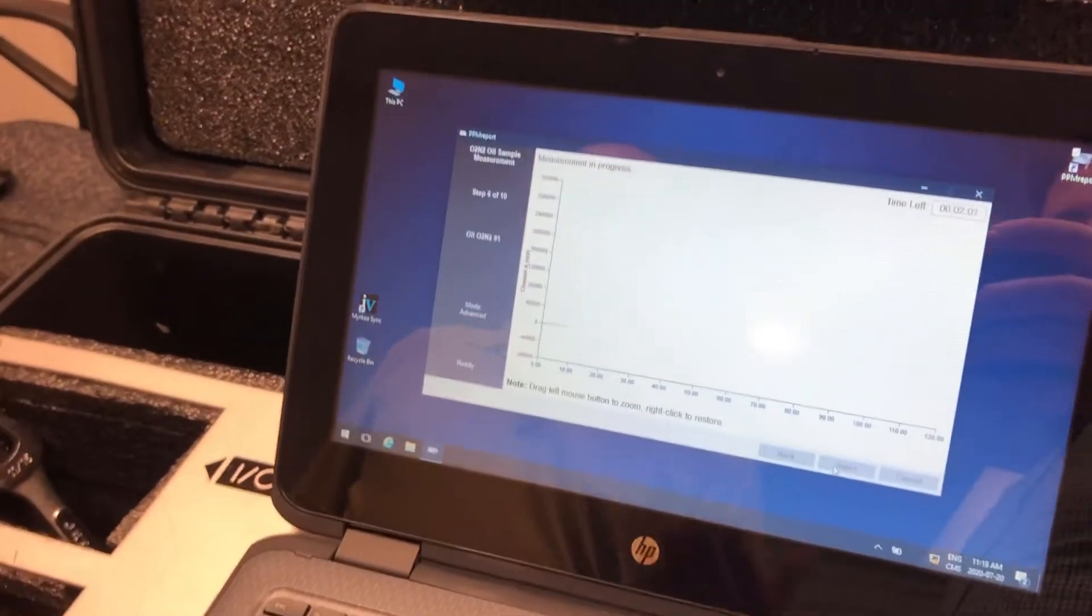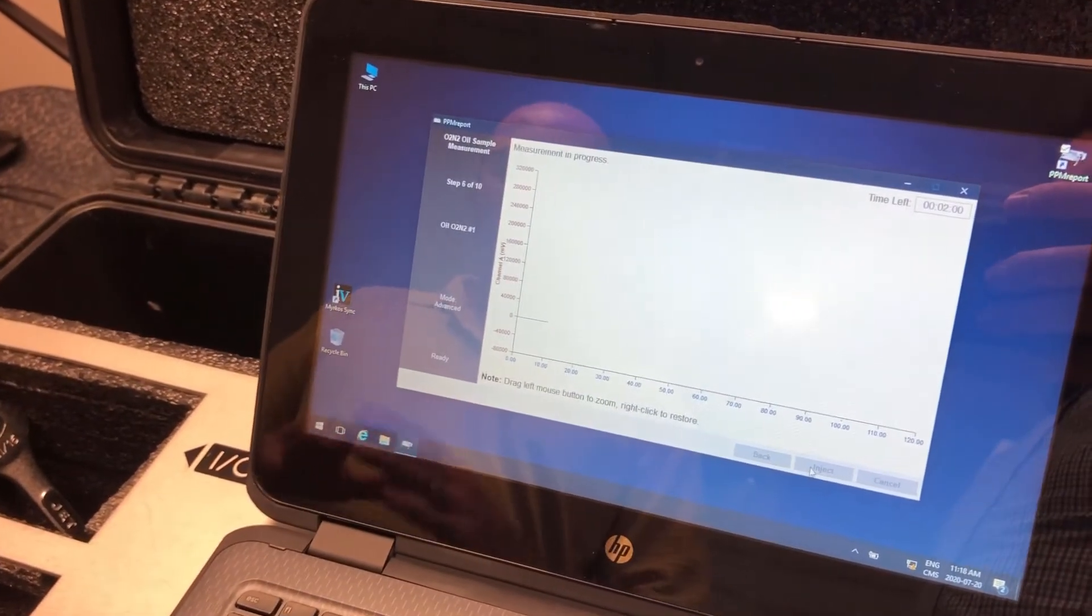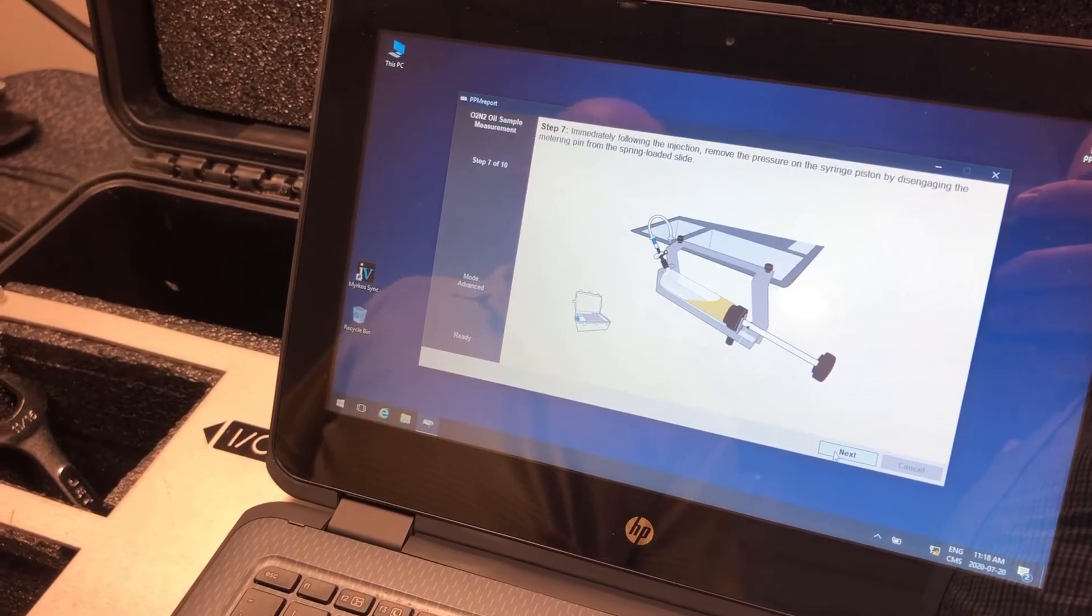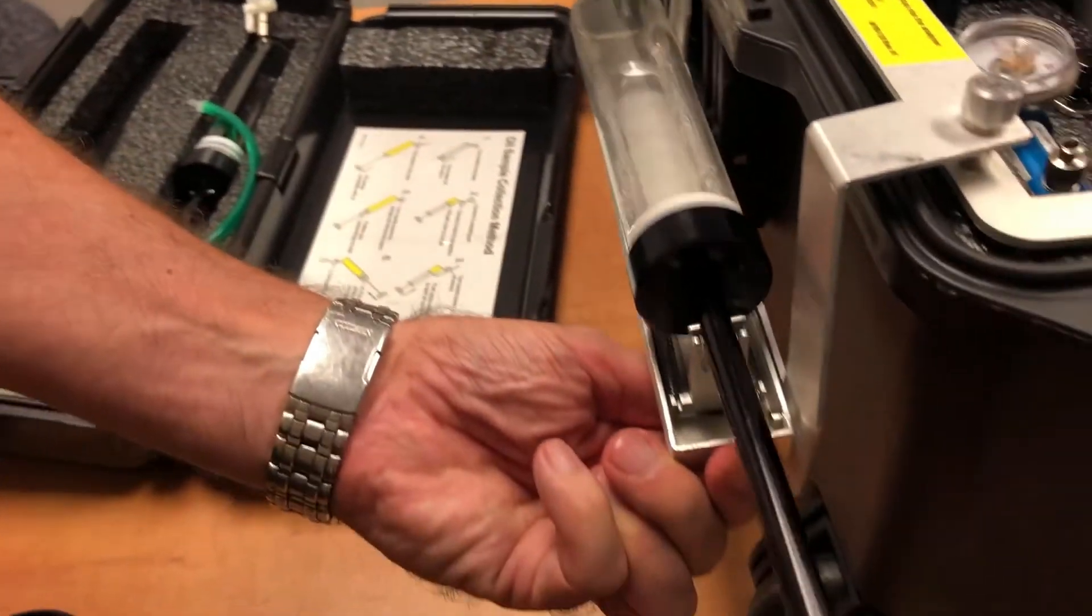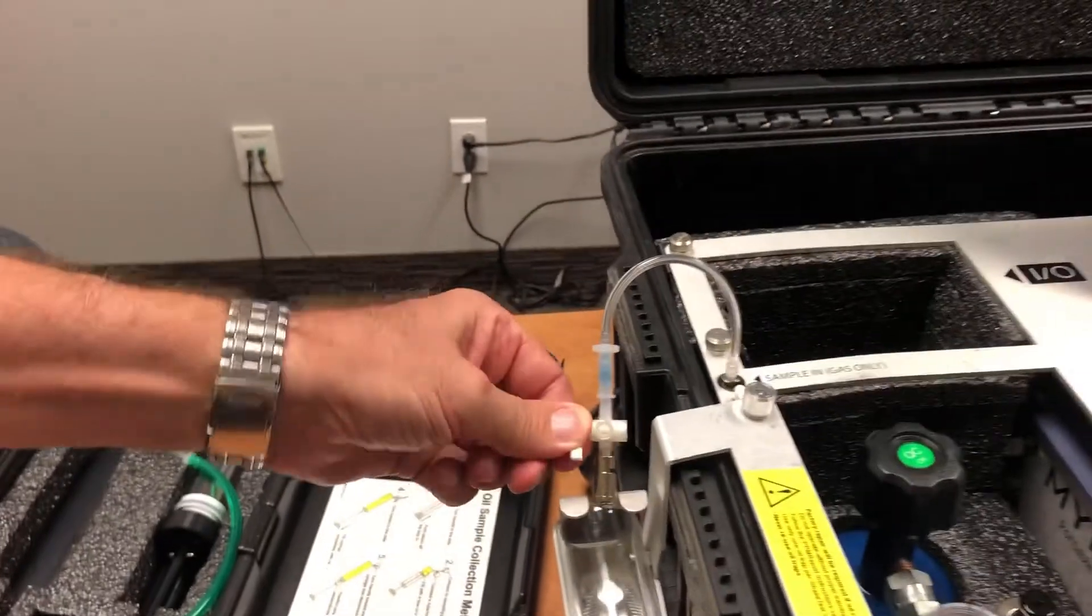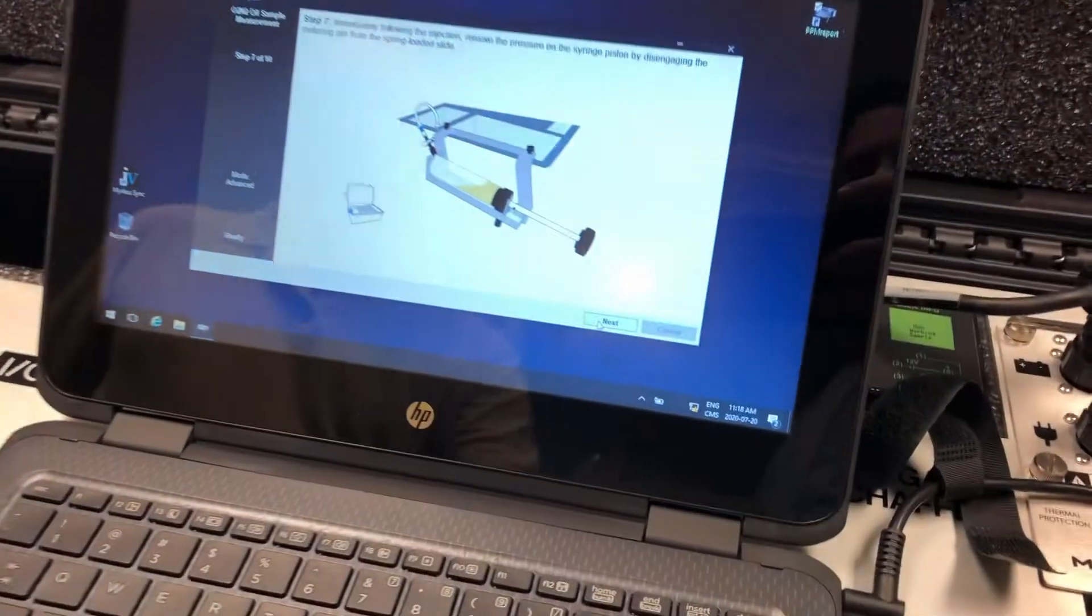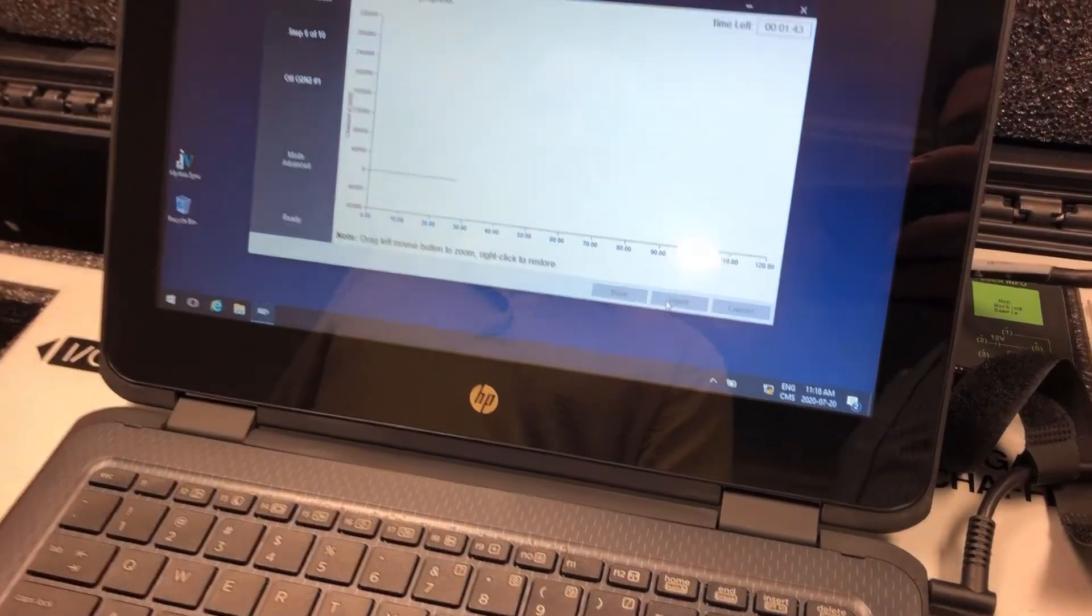That will be combined with the other seven gas, and then you have your full nine gas DGA analysis done by the Mirkos. So the next step again, like before, we remove the pressure on the syringe. You close the valve just as a precaution, and we're going to wait for the results.